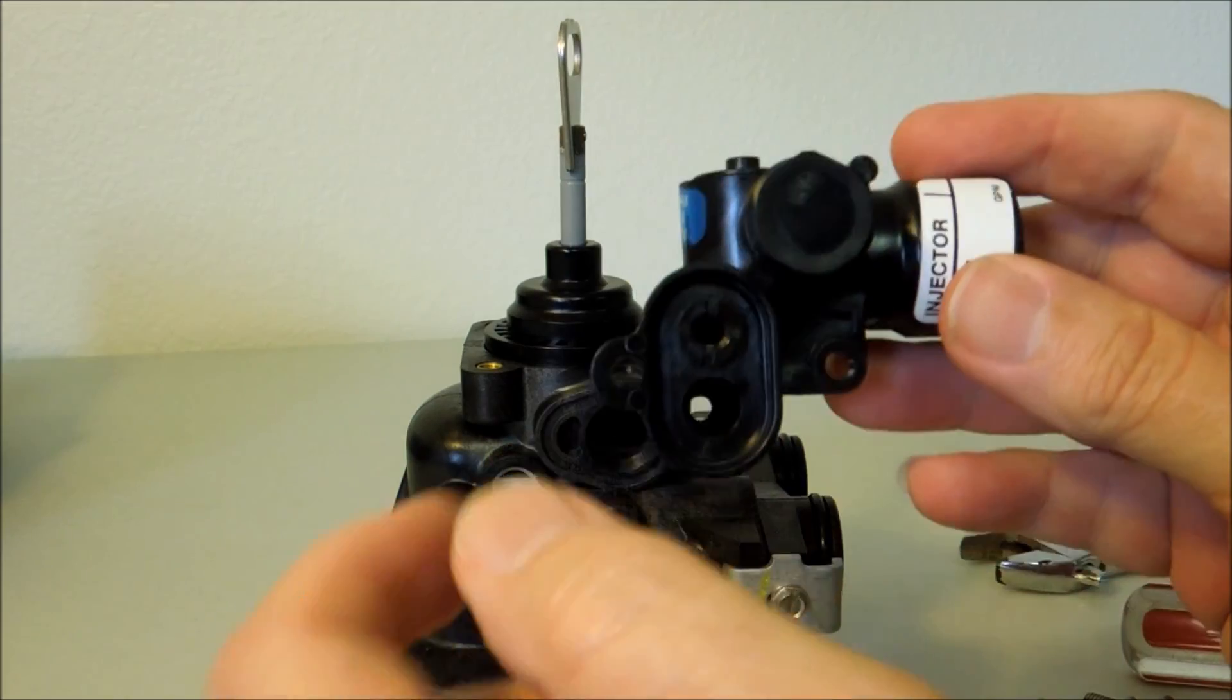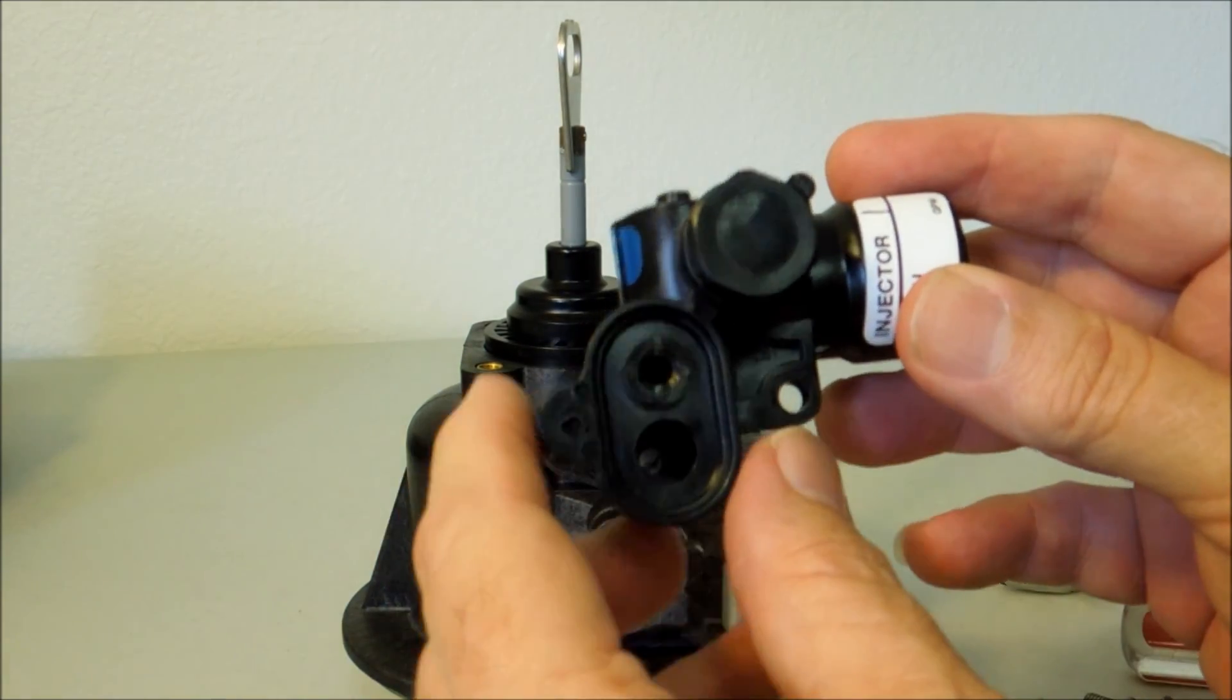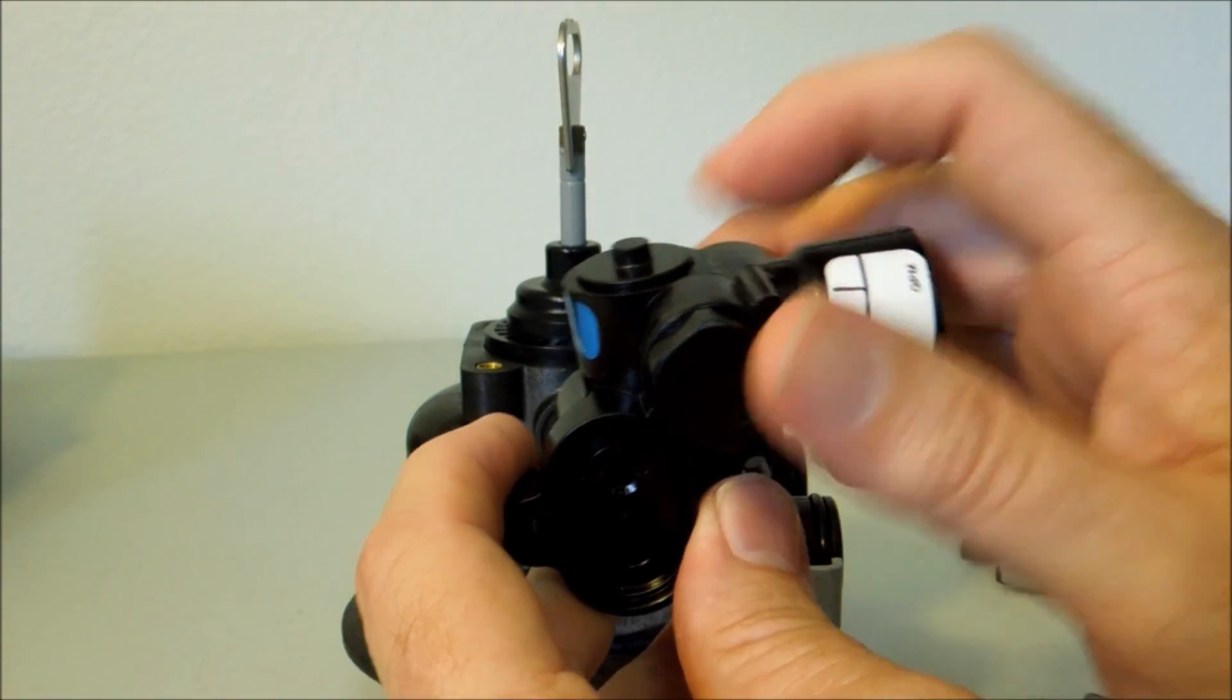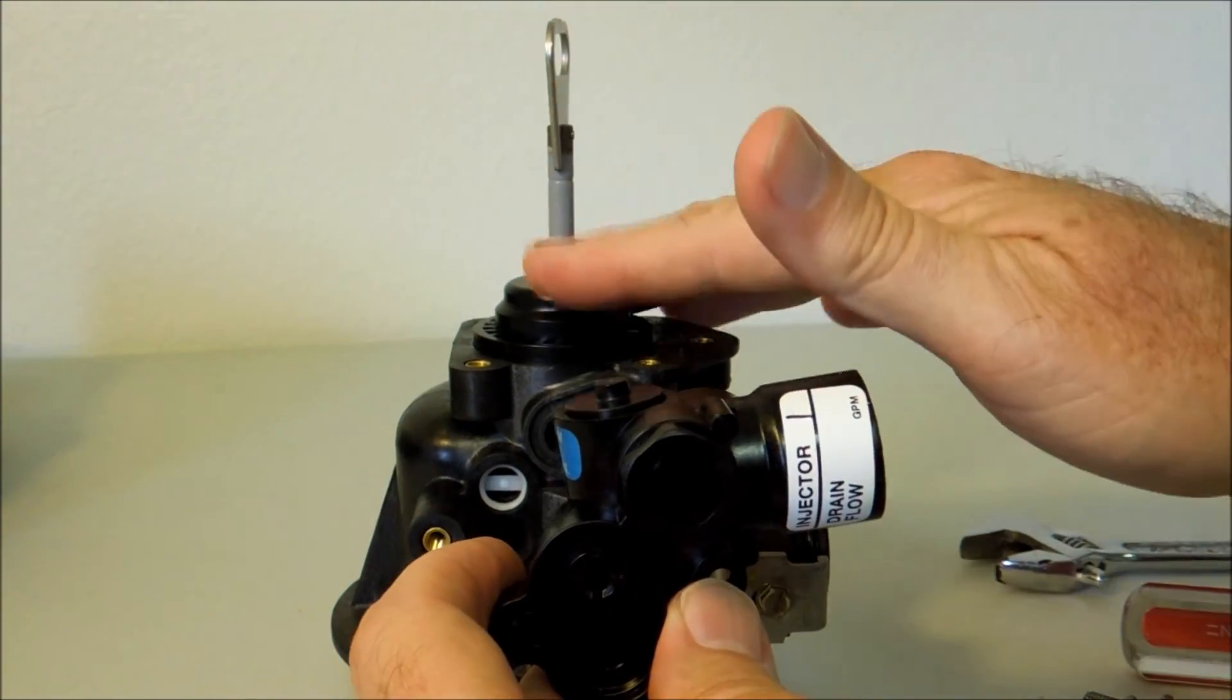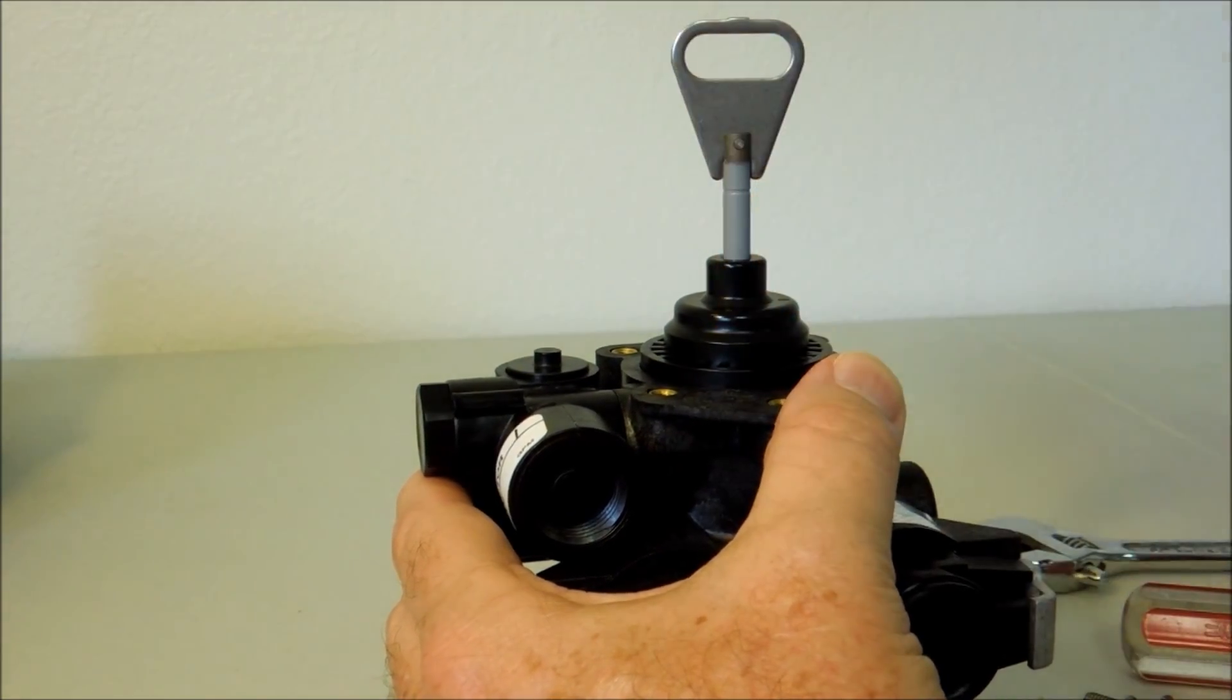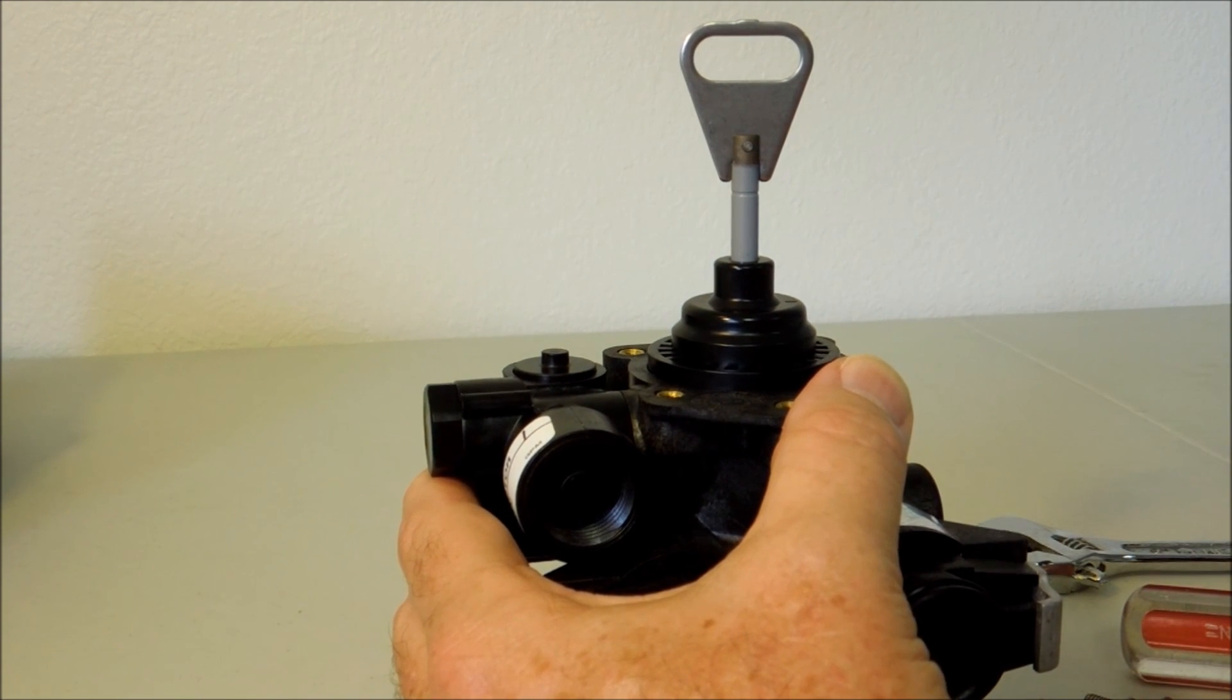So we've removed the screen, we've put in a plugged injector nozzle, we've plugged off the brine fitting, and we've removed and plugged the brine valve assembly and changed to the filter piston. And now just put it back together, put the power head back on. This is now a backwash only valve.